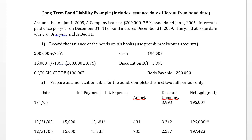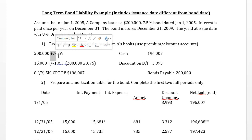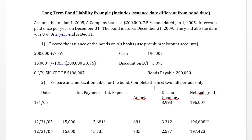When we record the issue of the bond, we need to calculate the present value to know how much cash we can expect to receive. Using financial calculator keystrokes with an 8% yield: at the end of the five-year period the issuer pays the investor $200,000, entered as a negative outflow. The company also pays out $15,000 total interest per year — the coupon rate times the face value. With I/Y = 8 and N = 5, Compute PV gives us $196,007.